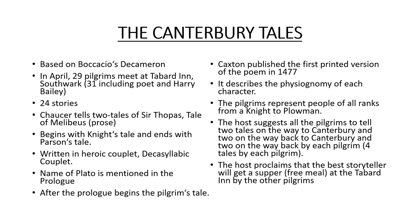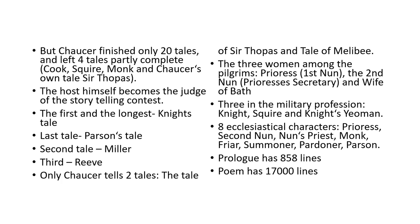Caxton published the first printed version of the poem in 1477. It describes the vision of each character. The pilgrims represent people of all ranks from knight to plowman. The host suggests all pilgrims tell two tales on the way to Canterbury and two on the way back, so each pilgrim in total should tell four tales. The host proclaims the best storyteller will get a free supper at the Tabard Inn. However, Chaucer finished only 20 tales and left four tales partly complete.